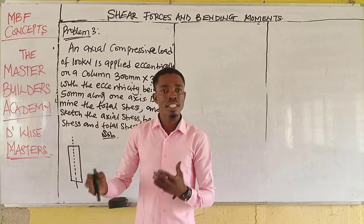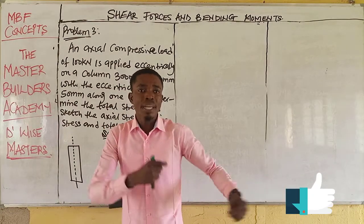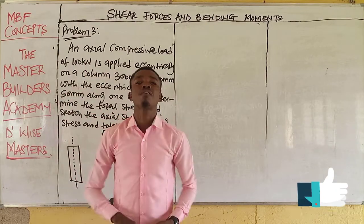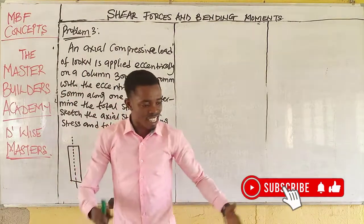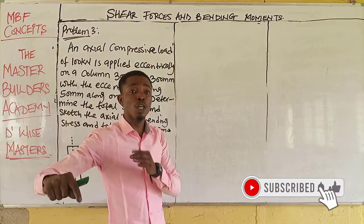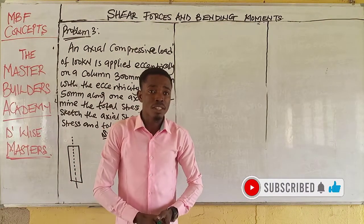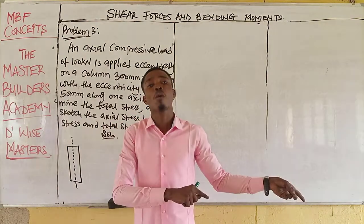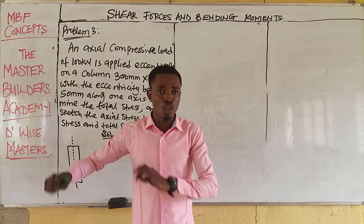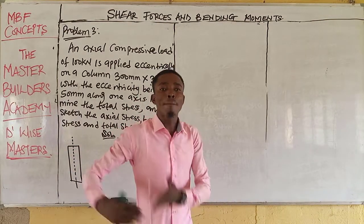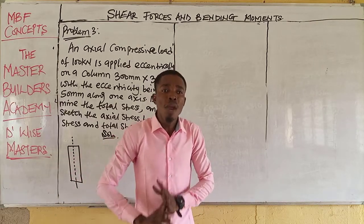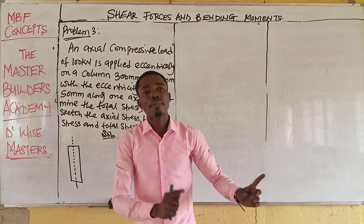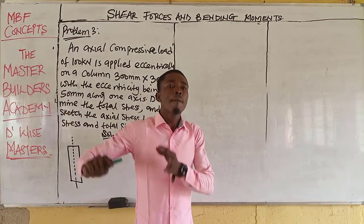What is eccentricity? Eccentricity is the distance between the neutral axis and the point of application of the load. Any time the load is acting directly at the neutral axis, eccentricity is zero. And when eccentricity is zero, there is no bending stress. Bending stress only occurs in a system that is not loaded at the neutral axis — any time there exists eccentricity, we have bending stress.